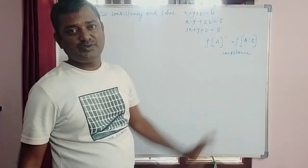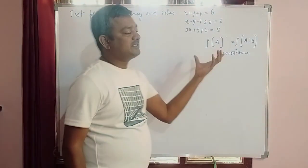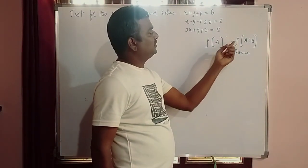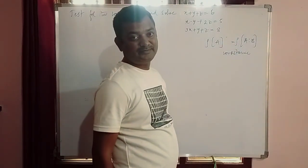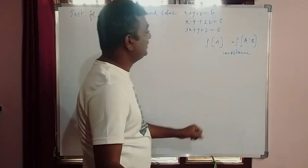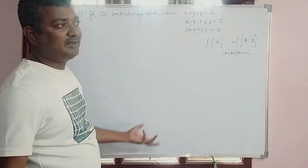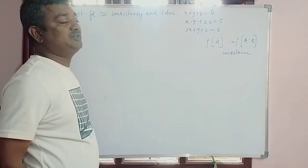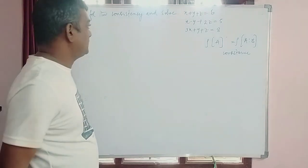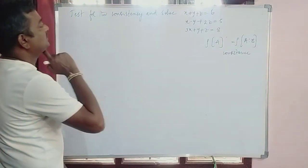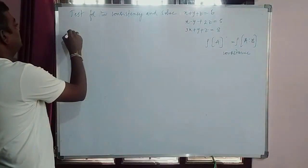So what is the condition for consistency? Rank of A matrix should be equal to rank of augmented matrix. If rank of A and rank of augmented matrix are equal then we say that the system is consistent. Then further it has a finite number of solutions or infinite number of solutions. Now let us first find out rank of both.